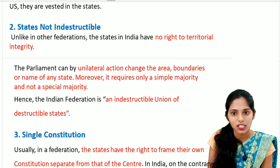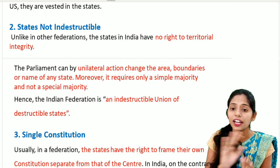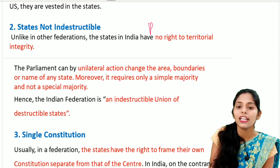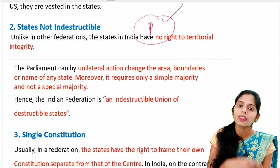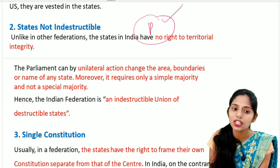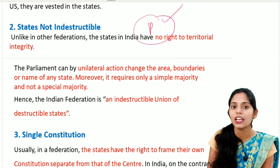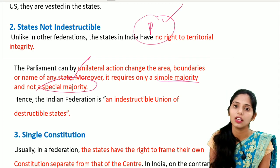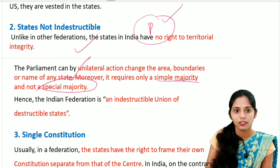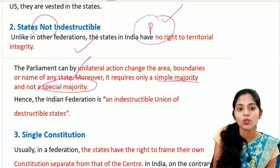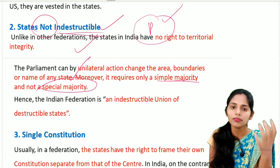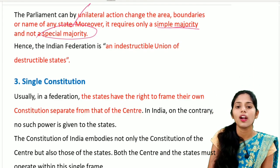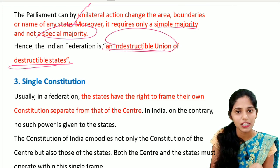The second unitary feature is that states are not indestructible. Unlike other federations, states in India do not have the right to territorial integrity. Parliament can take unilateral action to change the area, boundaries, or name of any state with a simple majority, without requiring a special majority. The consideration of the state legislature is not even binding on the President. So the Indian federation is called 'an indestructible Union of destructible states.'